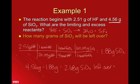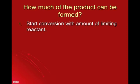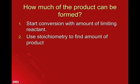So what if instead of being asked how much of your excess you're going to have left over, what if they actually wanted you to calculate how much product are you going to make? Well, it's just as simple. You start your conversion with the limiting reactant again. Once you know your limiting reactant, that's the one you're going to start with every time. And then again, you just use your stoichiometry and convert to the amount of product.